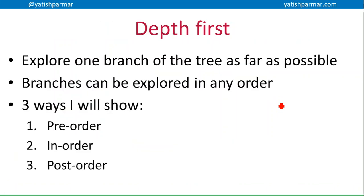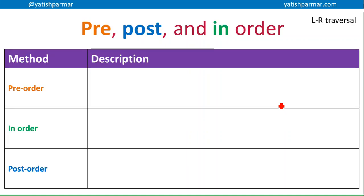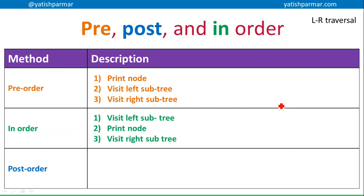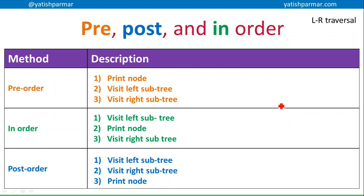There are three different ways we're going to talk about traversing a tree: pre-order, in-order, and post-order. This is for a left-to-right traversal; a right-to-left traversal would be slightly different. With pre-order — pre meaning before — I'm going to print the node before I visit the left subtree and the right subtree. With in-order, I visit the left subtree, then print the node, then visit the right subtree. With post-order, I visit the left subtree, visit the right subtree, and then print the node.